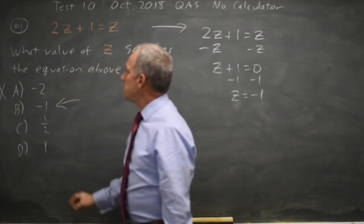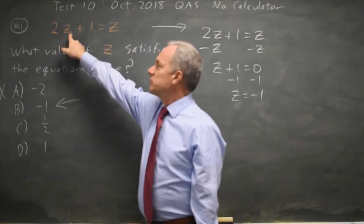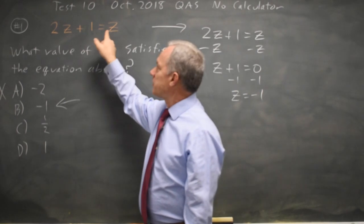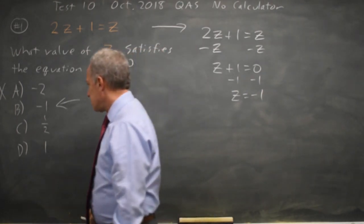If I try choice b, twice negative 1 is negative 2, negative 2 plus 1 is negative 1, and that is negative 1, so b does work.